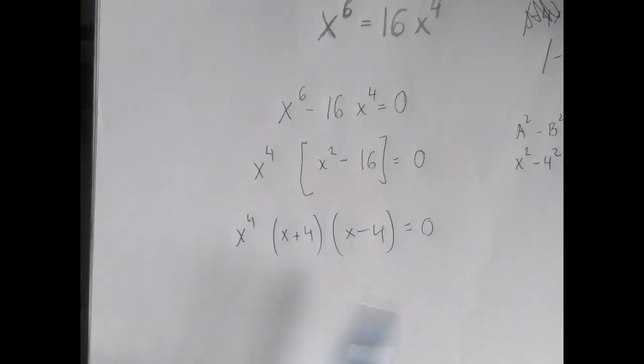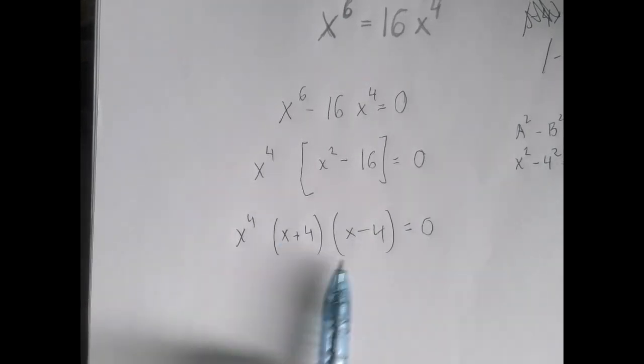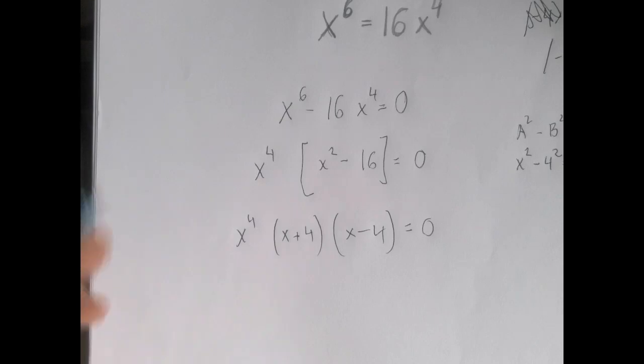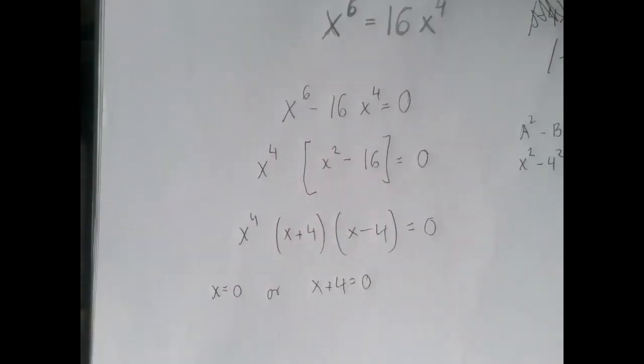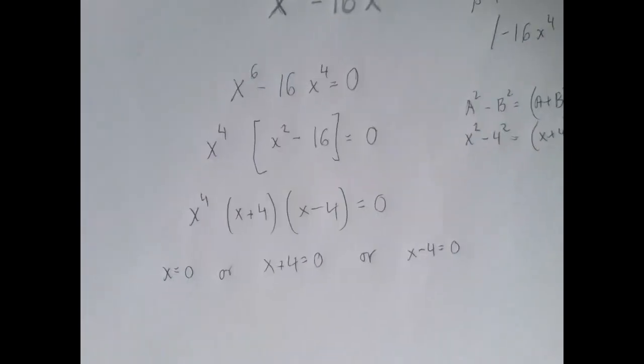This is a product that is zero, and it has six factors. One factor is x - 4, another one is x + 4, and four others are just x. So this product can be zero if either x equals zero, or x + 4 equals zero, or x - 4 equals zero.